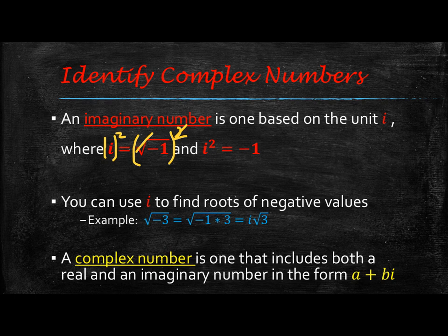You can use i to find roots of negative values. So when we're trying to find the square root of negative 3, for example, we can split that up and say that's the square root of negative 1 times 3. The square root of negative 1 is i, so we put the i on the outside and leave the square root of 3 under the radical.